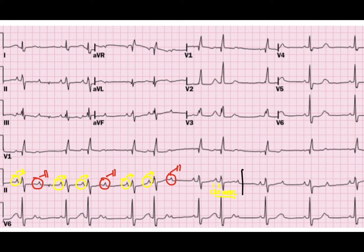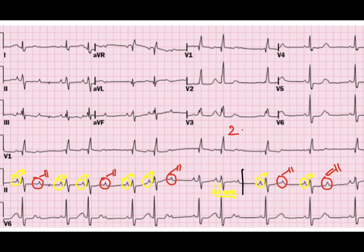So up to this point it is second degree type 2 heart block. But what about this part now? This P wave conducts, this one blocks. This P wave conducts, this one blocks again. Here, the type 2 heart block has converted to high degree AV block — that is 2-to-1 AV block, where for every 2 P waves only one conducts to the ventricles and the other is blocked.